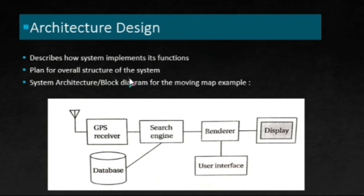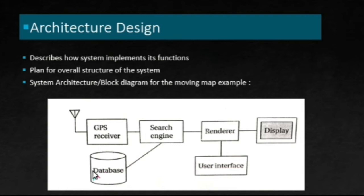To understand Architecture Design in more detail, let us take an example of a Moving Map. A Moving Map is a handheld device that displays the map of the terrain around the user's current position. It obtains this position from GPS, which is a satellite-based navigation system. Here is the architecture, also known as the Block Diagram or System Architecture of the Moving Map example.